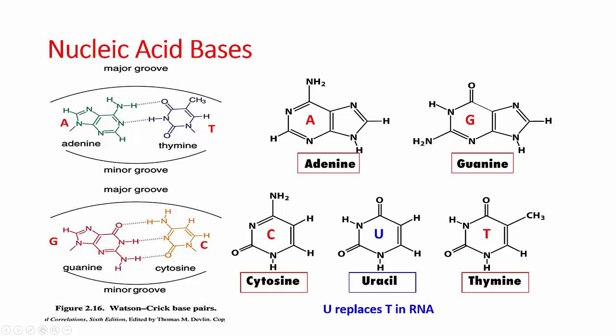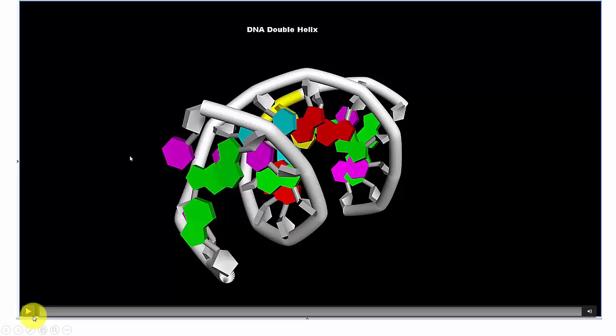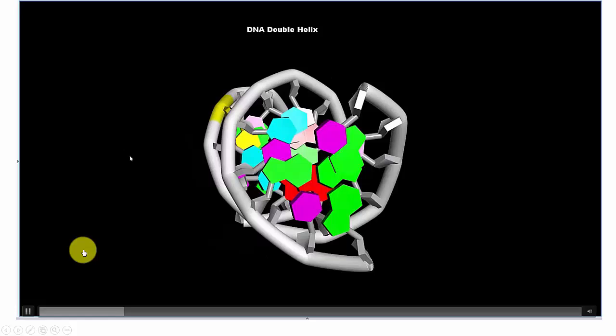These are the bases — the nucleic acid bases A, T, G, and C — and here are their molecules. RNA is a little different; it has a U instead of a T. And here is the double helix of DNA, where the bases hold it together in the middle, keeping the two strands together. It's an amazing molecule.